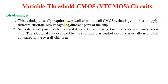The disadvantage of the VTCMOS circuit is that we are adding an external circuit, the substrate bias control circuit, which increases the overall chip area compared to other techniques. This technique also typically requires twin-well or triple-well CMOS technology in order to apply different bias voltages to different parts of the chip.